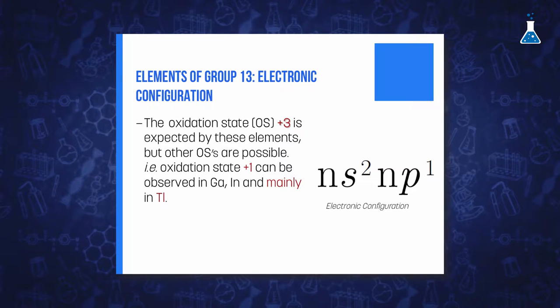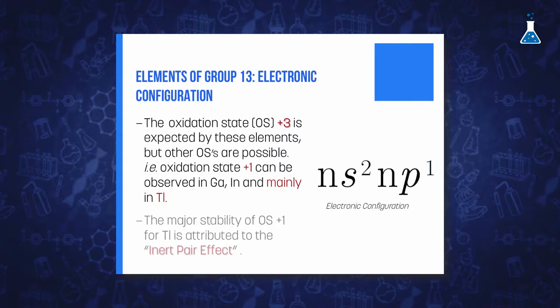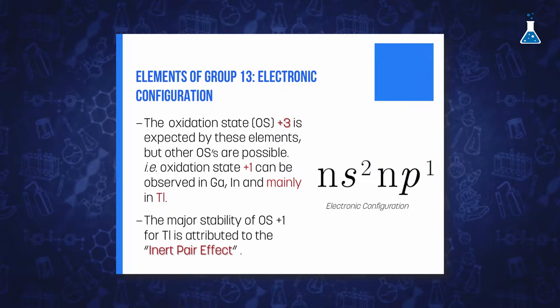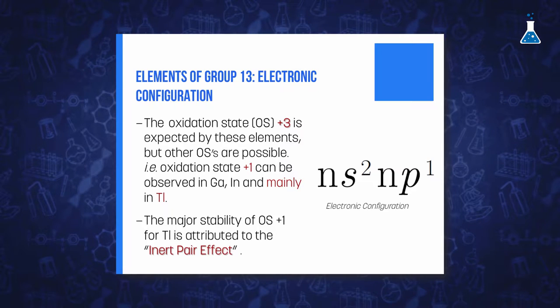The 1+ state is most common for thallium as a consequence of the inert pair effect. This term is used to describe the resistance of the outer s² pair to bonding, because of an increasingly unfavorable balance between the energy required for bond formation and the energy released in bonding.